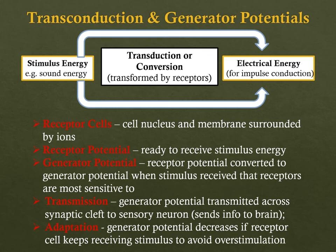Transduction is the conversion or transformation of one form of energy to another — for example, changing stimulus energy to electrical energy. Receptor cells have a cell nucleus, a membrane, and are surrounded by ions. The resting potential in a receptor cell is called the receptor potential. The receptor potential is converted to a generator potential when the receptor receives the stimulus it is most sensitive to.